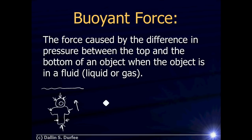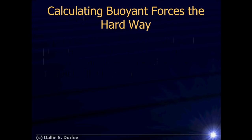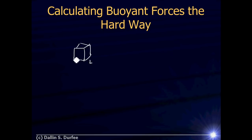Whenever I put an object inside a fluid, gravity will still pull it down, but there will be an additional net force from the fluid, which is due to the difference in forces due to pressure on the top and bottom of the object. So how do we calculate the buoyant force on an object? Let's start by doing it the hard way. Imagine I have a cube with sides of length L, oriented so that the area vector on the top and bottom point directly up and directly down.